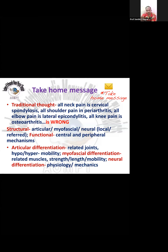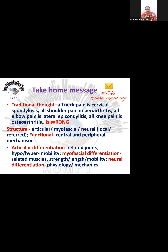Symptoms can be local or referred — referred symptoms are located far away from the affected structure. When differentiating pain mechanisms, consider whether it is the central nervous system or peripheral mechanisms driving pain. Centrally, we have central sensitization and cognitive-affective, psychosocial factors. Peripherally, we have sympathetic nervous system involvement, peripheral sensitization, and nociceptive pain.